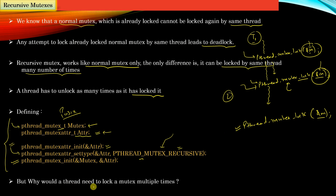Now, having understood the functionality of recursive mutexes, a simple question arises: why would a thread need to lock a mutex multiple times in the first place? Why would the same thread attempt to lock a particular mutex multiple times? In the next lecture video, I will show a practical example where in big applications a programmer might end up locking the same mutex again and again.